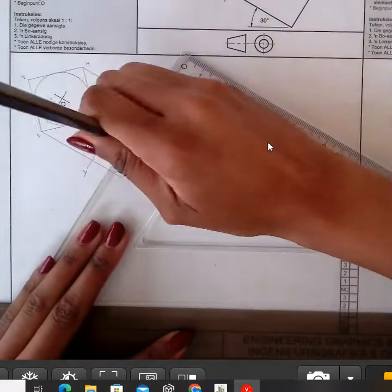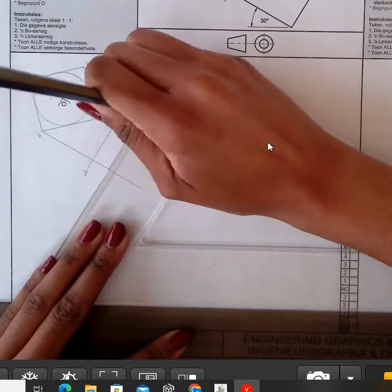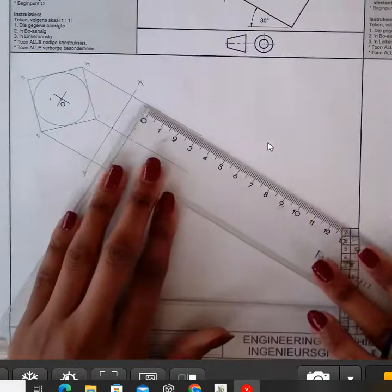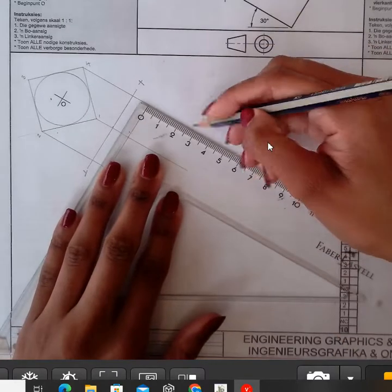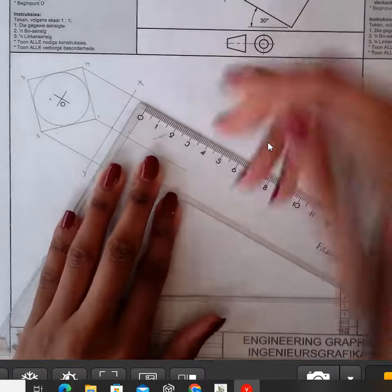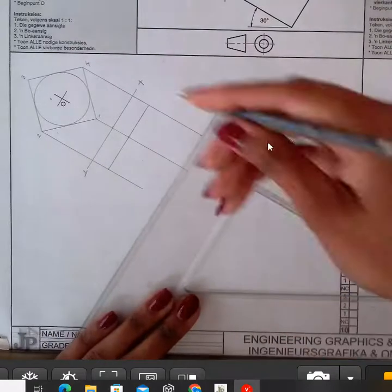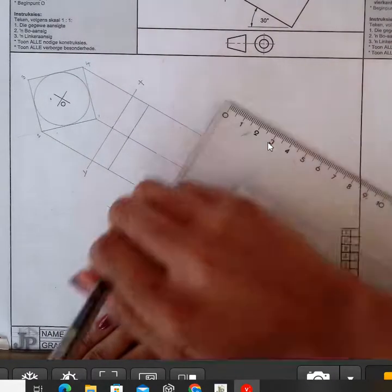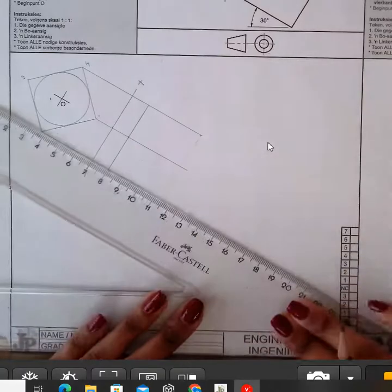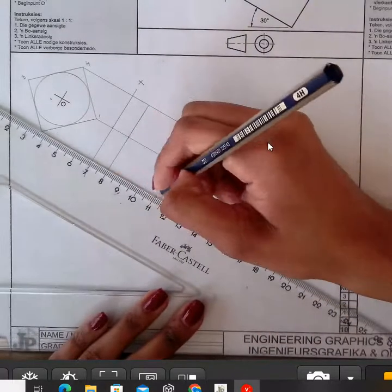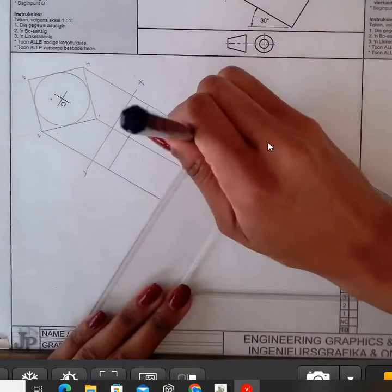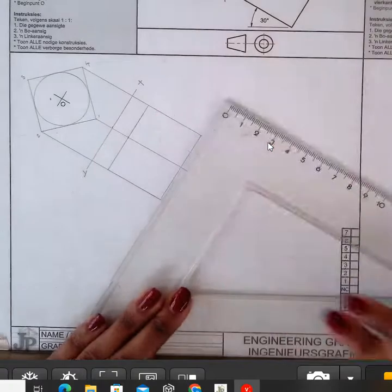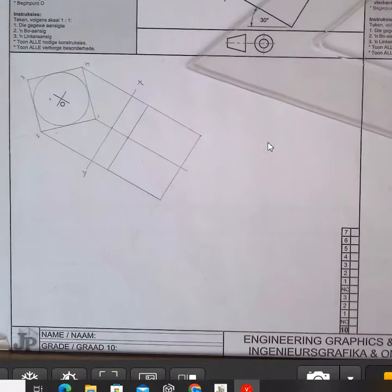The reason why we use a 60 is because we want to draw a line that is perpendicular to these lines that are going at 30 degrees. So now we know that this XY line is perpendicular to the lines that we used for projection. And from there you will measure 10 so that you can start drawing your front view.